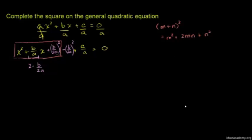And here we have that pattern now — that's the whole point behind completing the square, the whole point behind taking half of b over a, that's b over 2a, and then squaring it and adding it here. We now fit that pattern: m is x, n is b over 2a, and 2mn — if I take x times b over 2a and multiply by 2, I get b over ax. So this trinomial, the first three terms, is a perfect square trinomial, and we can write it as x plus b over 2a, all squared.